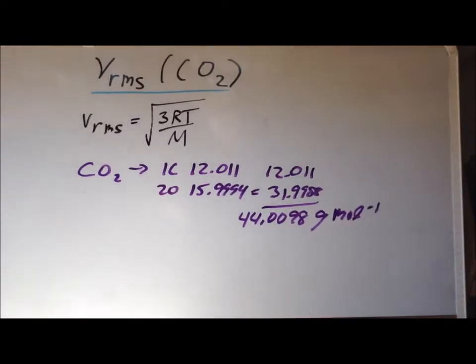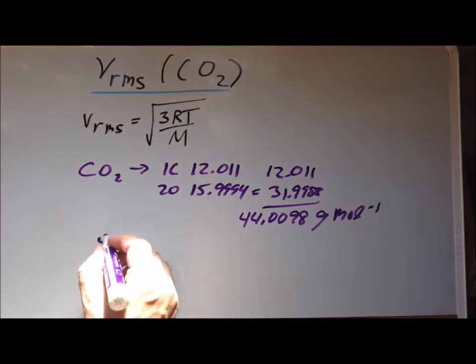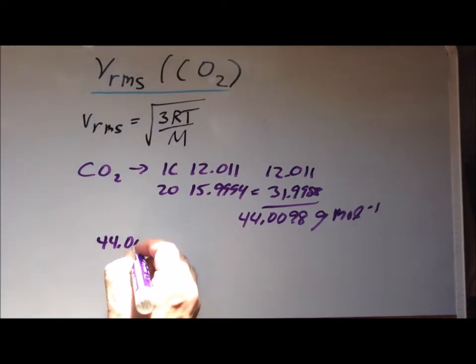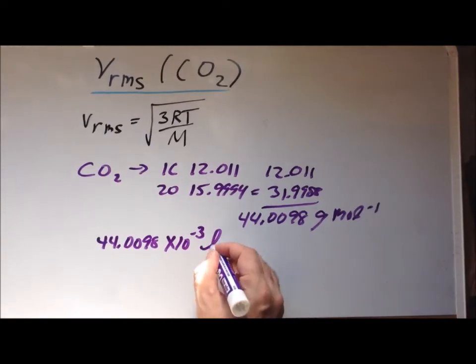For later purposes, we are going to want to think of the molar mass in terms of kilograms per mole. So knowing that there are 10 to the minus 3 kilograms in one gram, this is equivalent to 44.0098 times 10 to the minus 3 kilograms per mole.